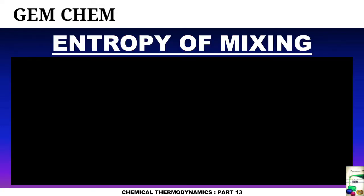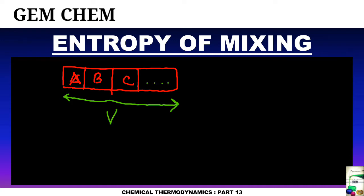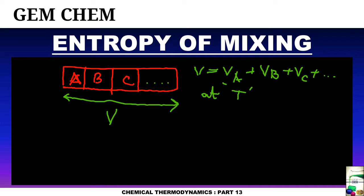Let us start. While mixing, we are taking several constituents within a container. Suppose this is our container and we have different compartments — compartment A, compartment B — with ideal gases named A, B, C, and so on. The container has a total volume V, where V = V_A + V_B + V_C + ... for all components. The temperature is fixed at T (isothermal condition), and since it is also isobaric, the total volume V remains fixed.